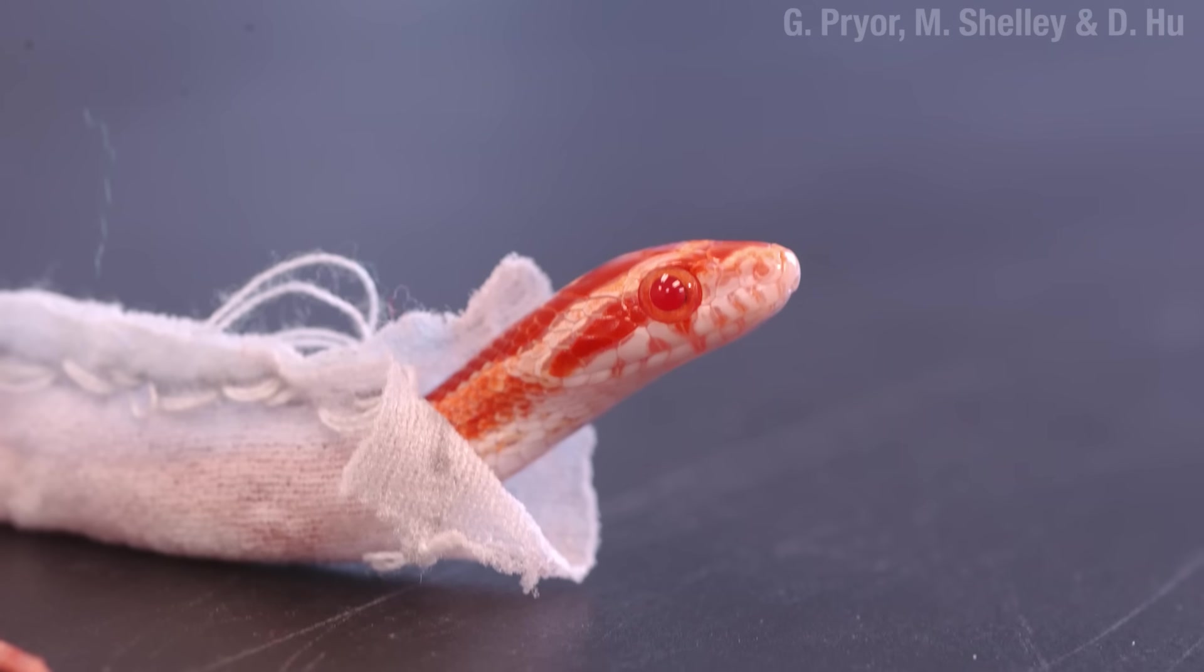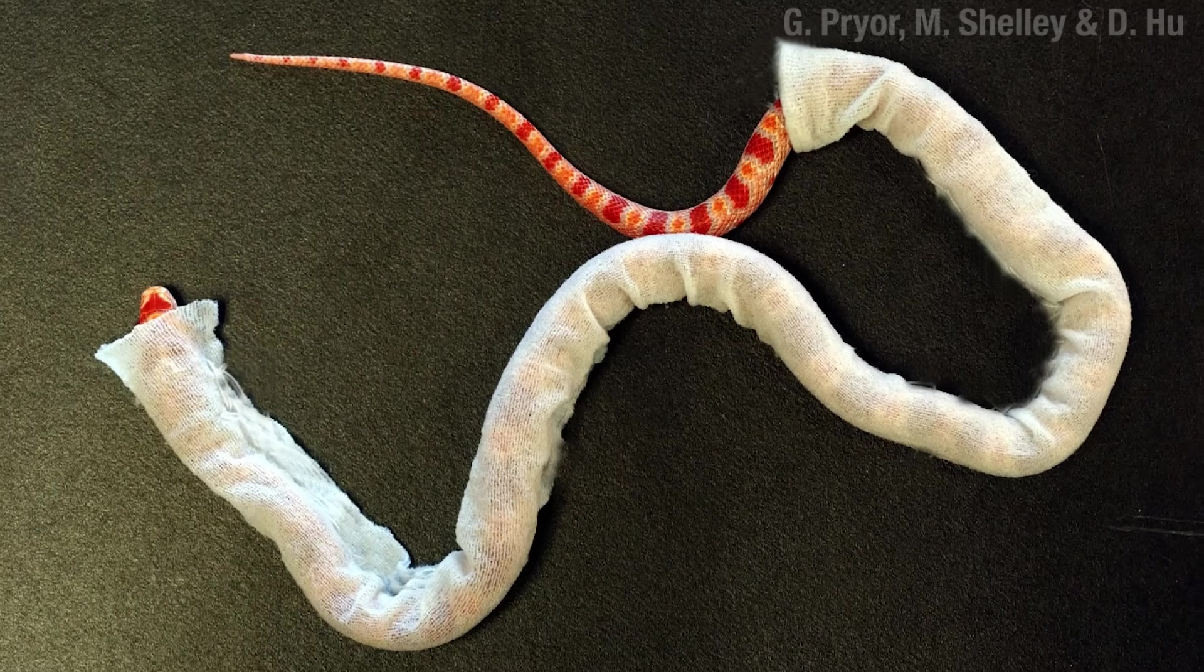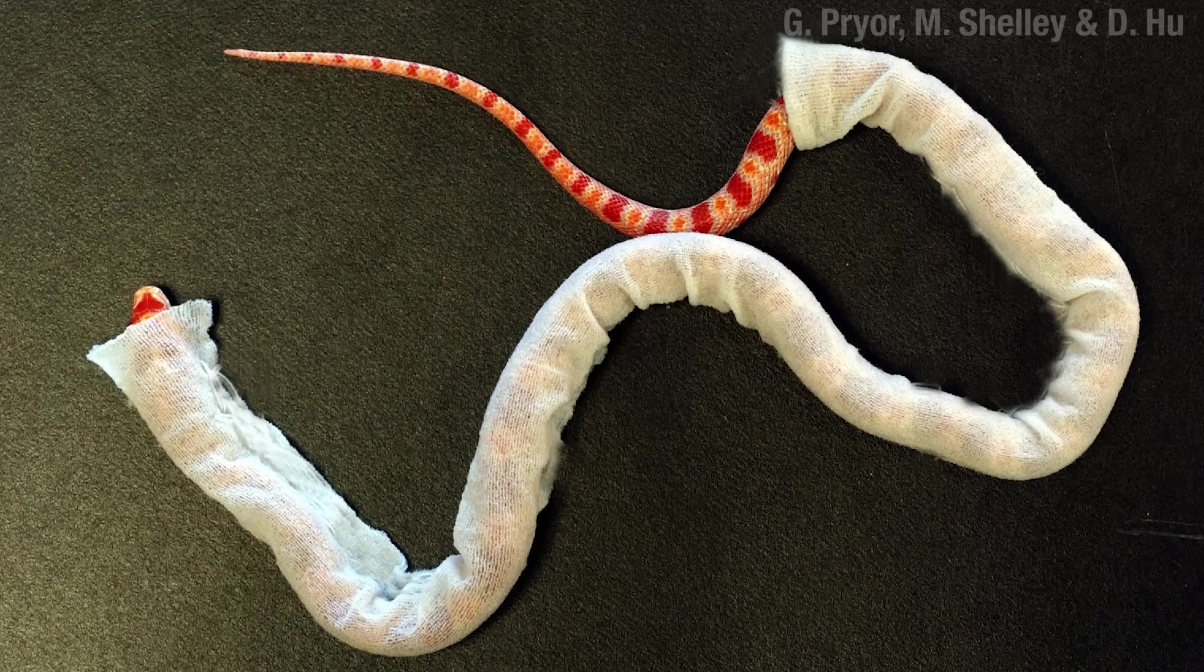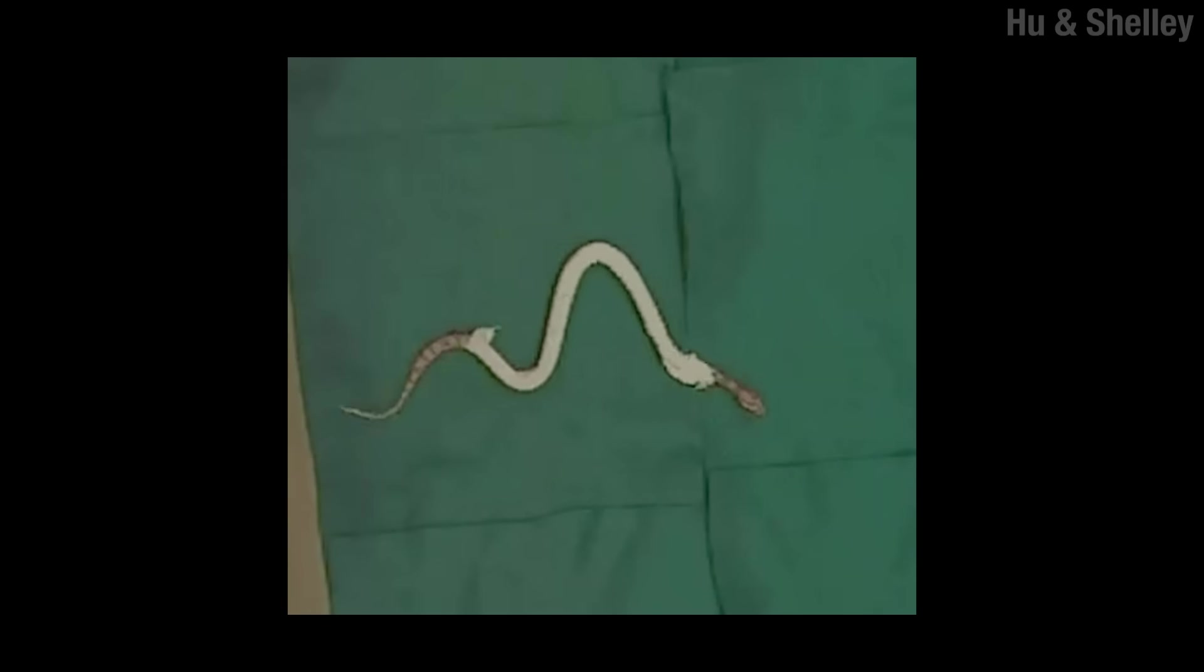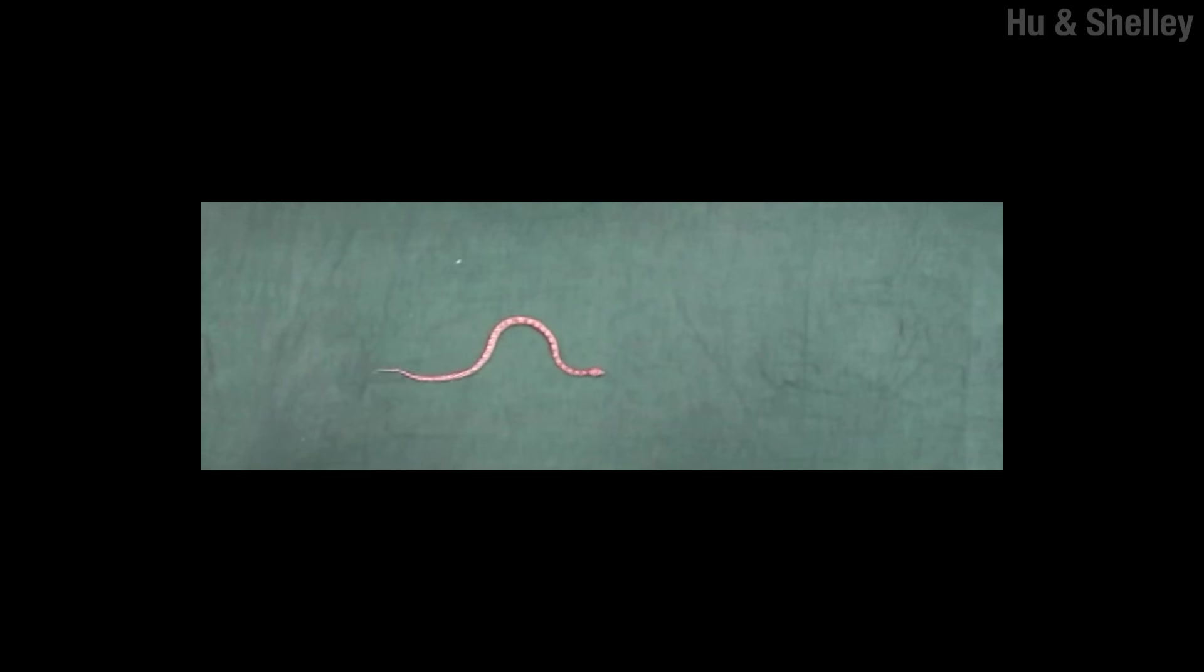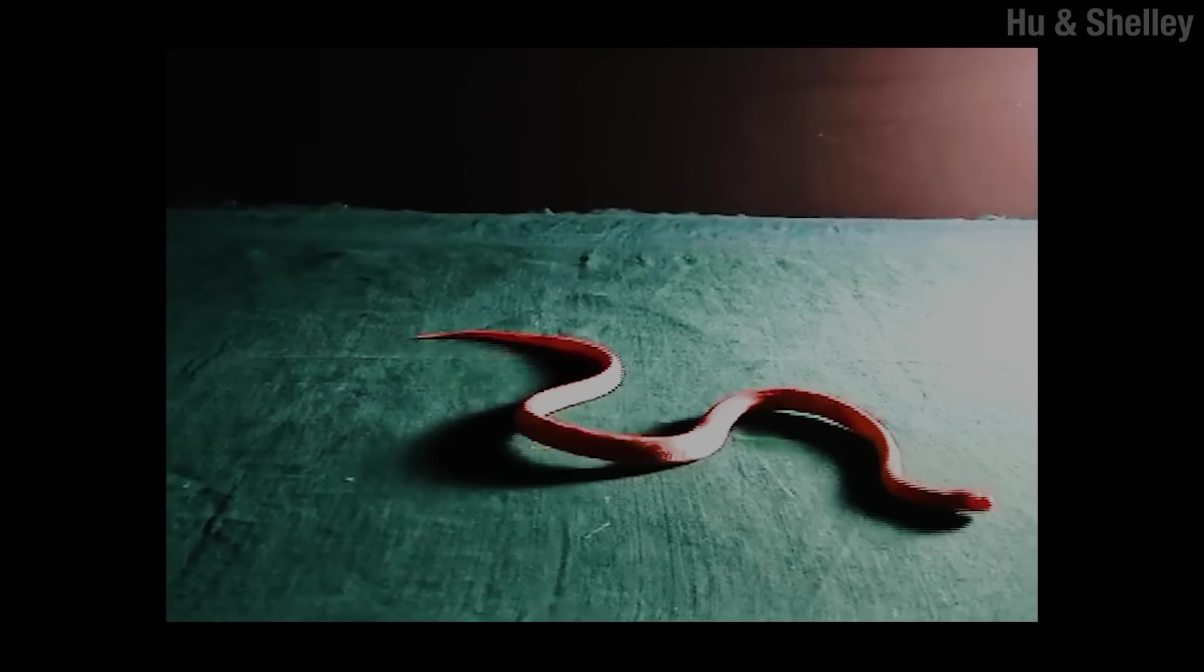The fact that those belly scales have less friction moving forward than when they press backwards is crucial here. If you put a snake in a onesie, adorable, it can still create friction with the surface, but now it's equal in all directions, and you can see it can't move forward. On a fabric surface, a snake can still use lateral undulation to move, but with nothing sticking up to push against, it has to rely on the friction from its belly, and you can see it slips around a bit.